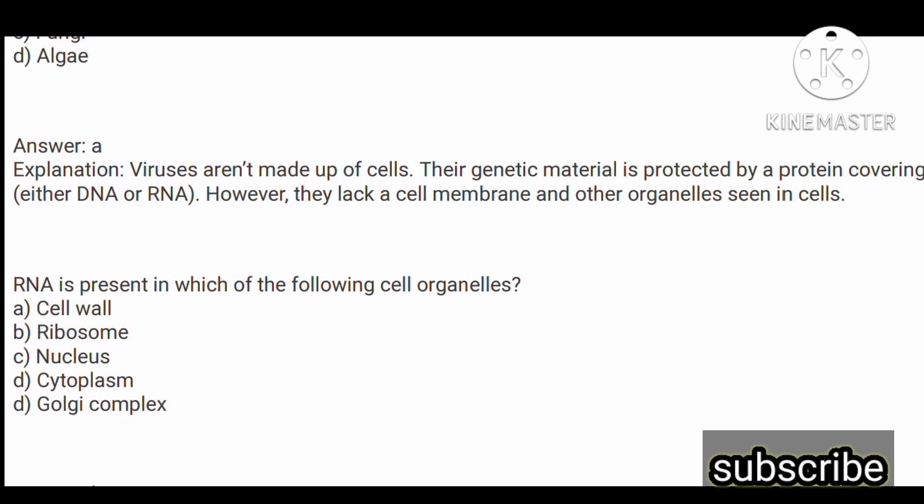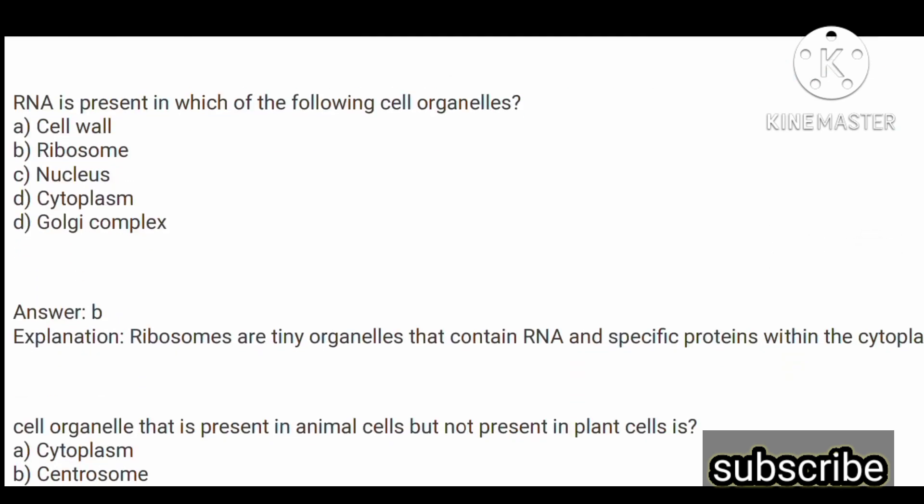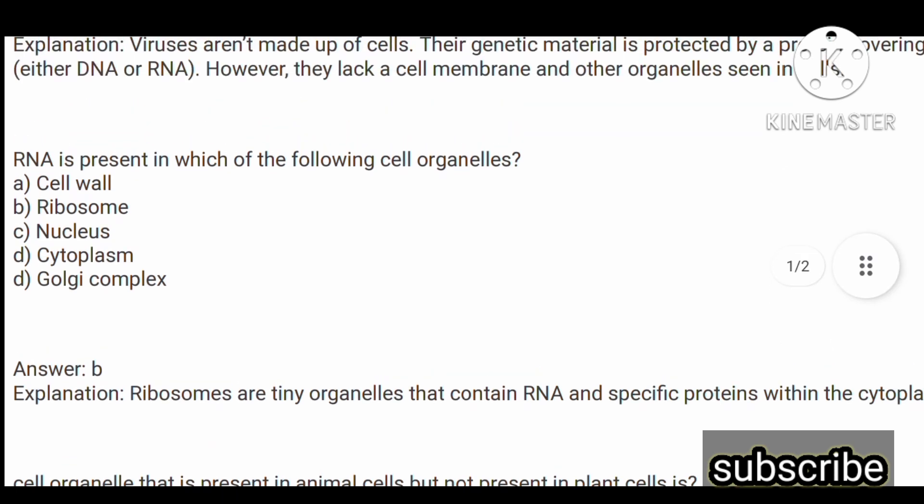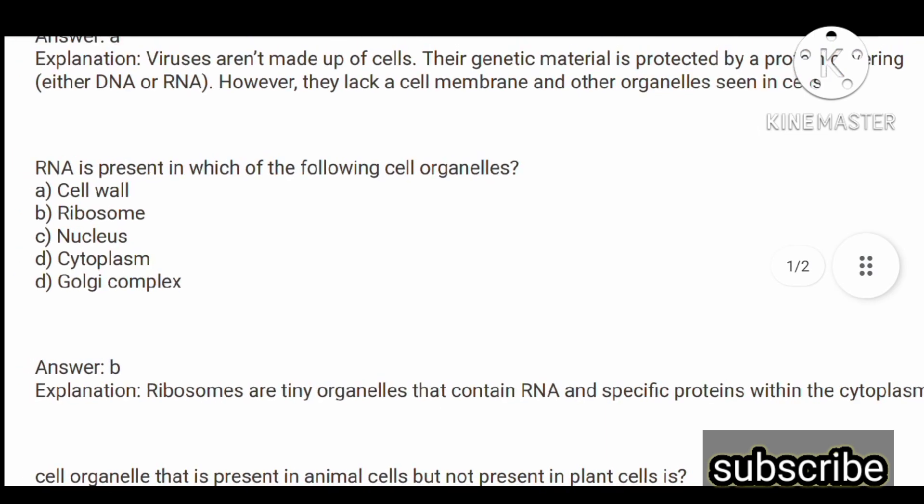Next question: RNA is present in which of the following cell organelles? Options are: option A, cell wall; option B, ribosome; option C, nucleus; and option D, cytoplasm. The answer is option B, ribosomes. RNA is present in ribosomes. Ribosomes are tiny organelles that contain RNA and specific proteins within the cytoplasm.